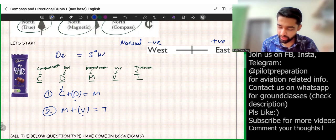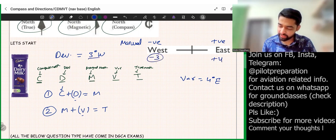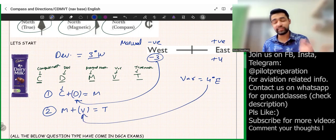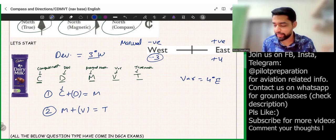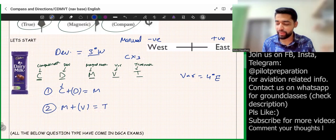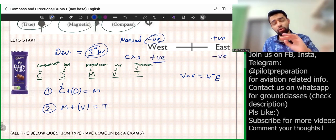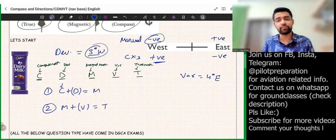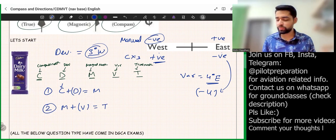That is how we solve these questions — just simple addition and subtraction, no division or multiplication. For the CX3 method, you must put deviation and variation values opposite to the manual values: west becomes positive and east becomes negative in CX3. So 4° east becomes minus 4, and 3° west becomes plus 3 in CX3. I'll clarify this further in the questions.